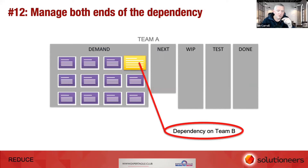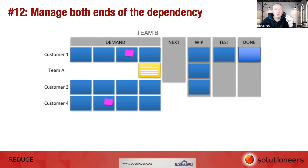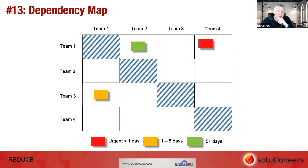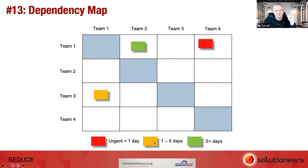Another technique is a simple dependency map. You can't be dependent on yourself — that's a sequencing issue. But you can map who's dependent on whom. For example, Team Three is dependent on Team One; a red indicator means it's urgent and needed within one to five days, while green means it's coming but more than five days away. I've seen this used really effectively at scrum of scrums meetings — it's a great way to visualize dependencies.